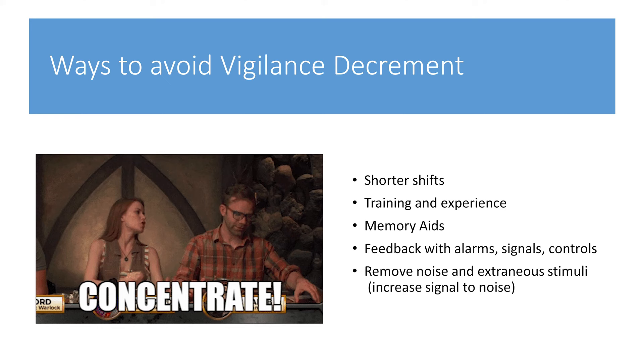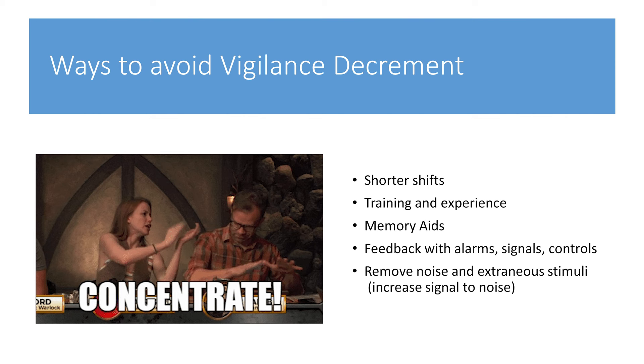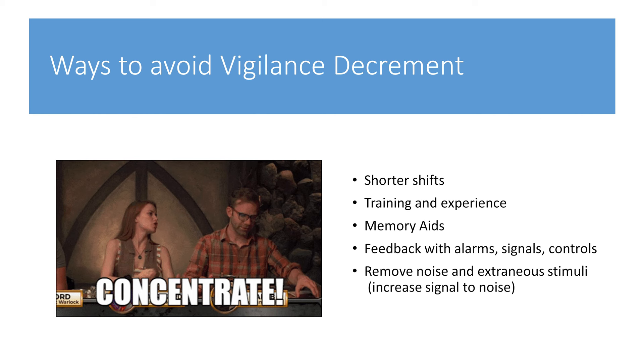So how can we avoid things like vigilance decrement? We can use shorter shifts or memory aids, more training and experience, enforced breaks, feedback with alarms, signals or controls, and we can focus on removing noise and extraneous stimuli which increases the signal-to-noise ratio. An example of this would be a factory environment requiring people to wear hearing protection — not because the threshold of noise is over the safe limit, but because it helps prevent distractions that prevent them from focusing on their task.